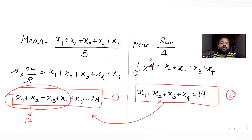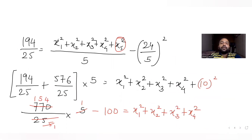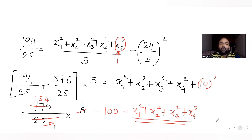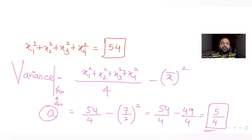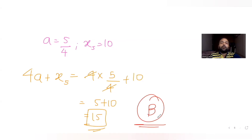To summarize: we used the idea of mean first to compare both means for the first 5 and first 4 observations. Once we got the sum of first 4 observations, we put that in the first equation and got the fifth observation as 10. Then using the variance formula for the first 5 observations, we found the sum of squares of first 5, substituted x5 as 10, and got the sum of squares of first 4 observations as 54. From that, the variance of first 4 observations came out as 5/4, giving a = 5/4 and the final expression matching option B.